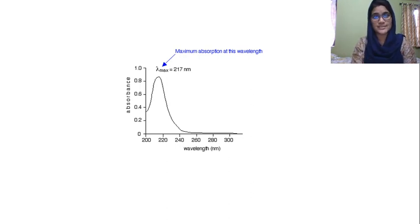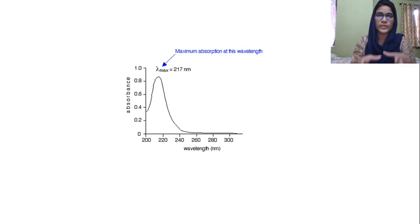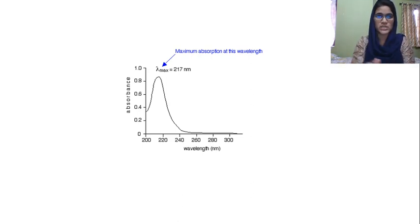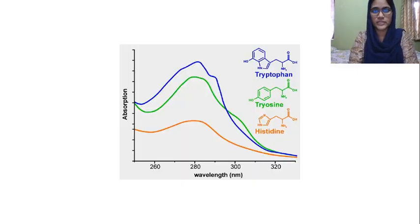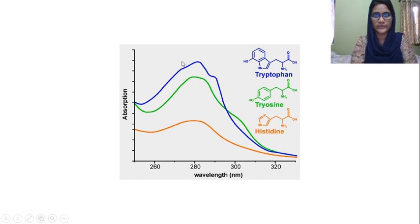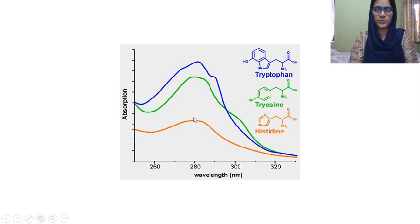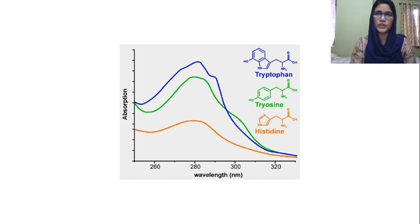Qualitative analysis for a protein: there is a protein, and there may be impurities or certain variations. Looking at the protein graph, you can see the absorbance around 280 nanometers wavelength. The aromatic amino acids — tryptophan, tyrosine, and histidine — absorb at this wavelength. This is the basis of UV visible spectroscopy for protein analysis.